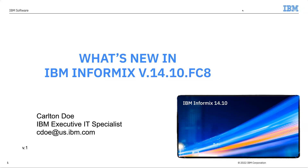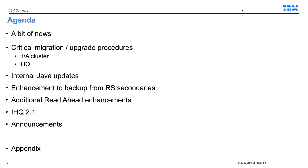VDOT Next is currently in planning and development and should be available by the middle of next year. So what am I going to talk about? A brief bit of news. I'm going to talk about some critical migration and upgrade procedures for FC8, particularly for those using an HA cluster or the IHQ utility. Then there are new features in FC8: Java updates, RS secondary backup changes, read ahead enhancements, and IHQ 2.1 features.